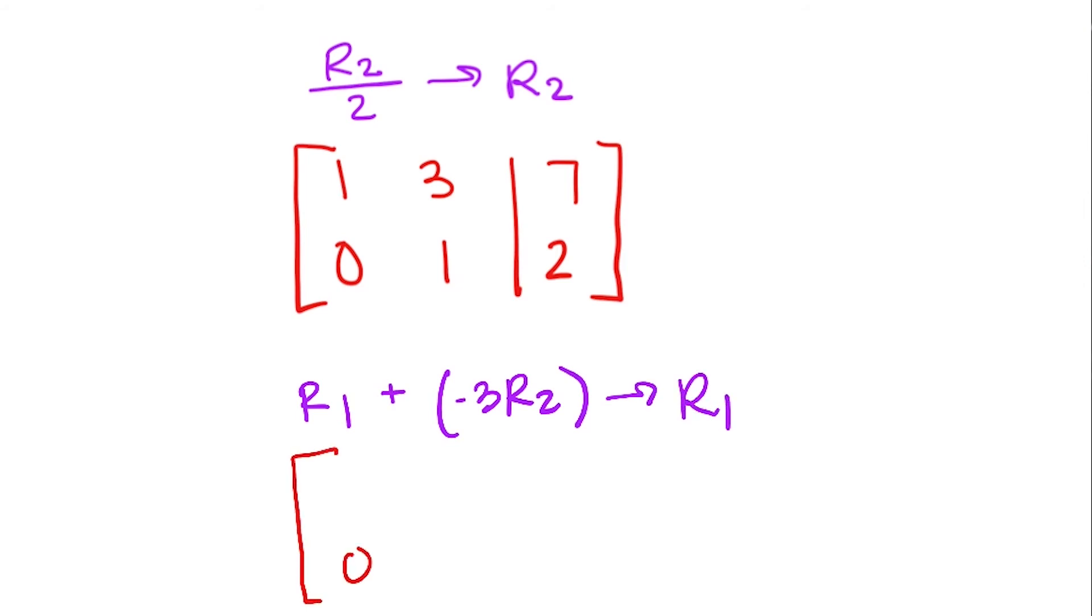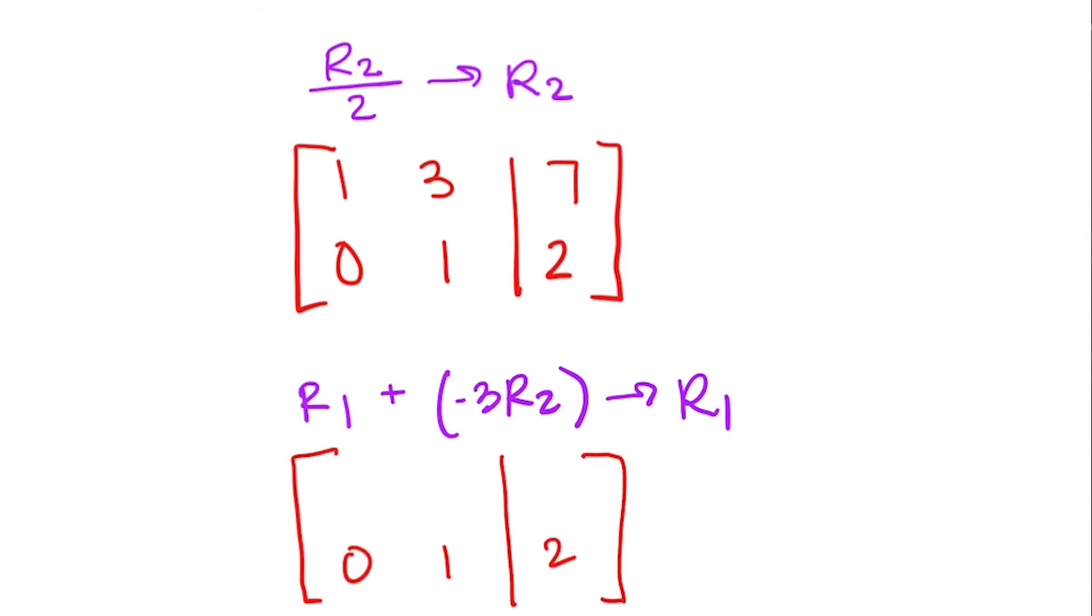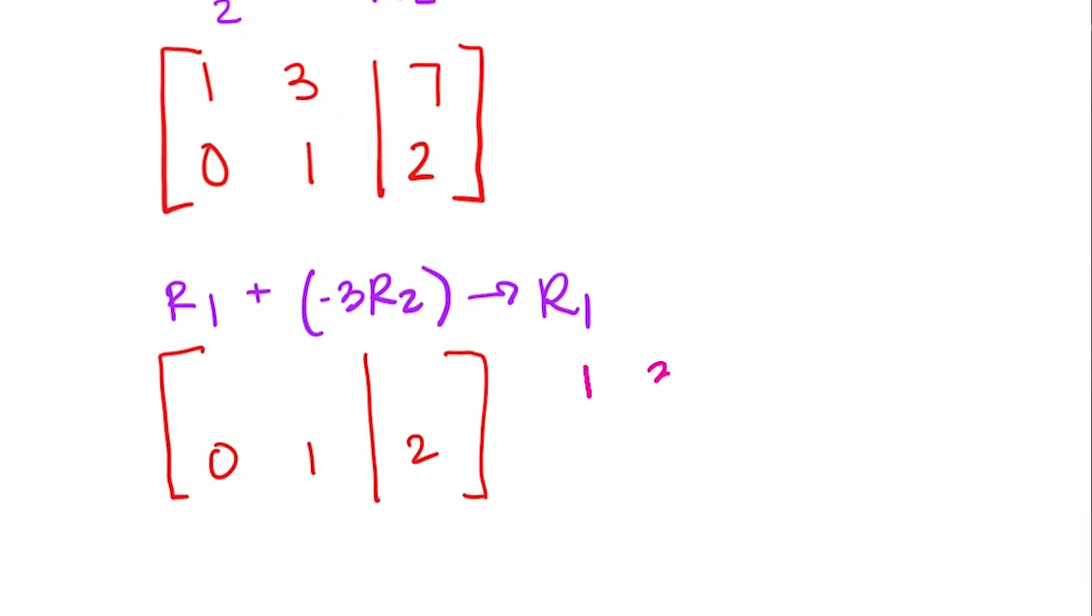So the second row is not changing now. And I'm going to do this math off to the side. So we have row 1, which is 1, 3, 7. And I'm adding that to negative 3 times row 2, which is 0, negative 3, negative 6. So adding those, we have 1, 0, 1.